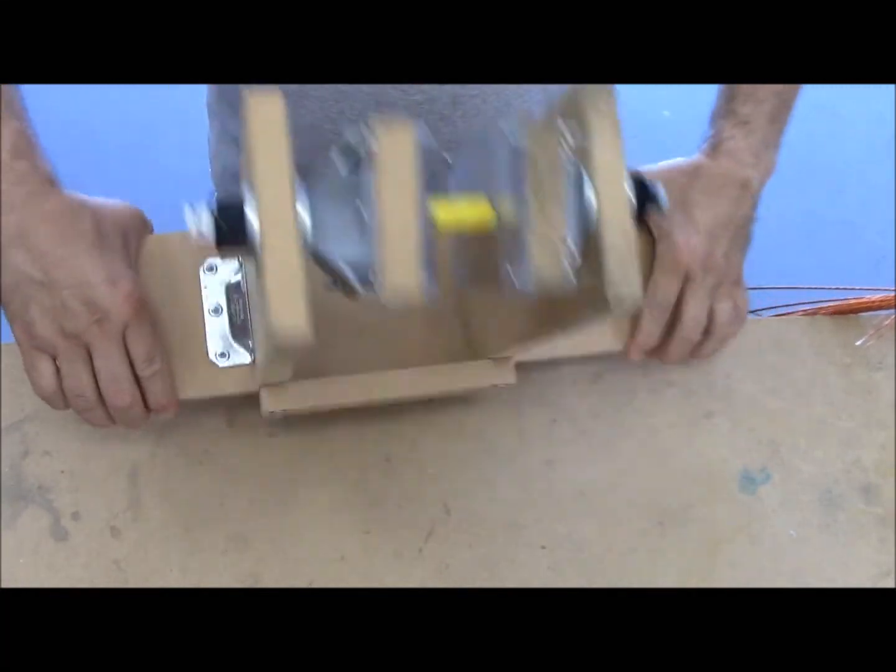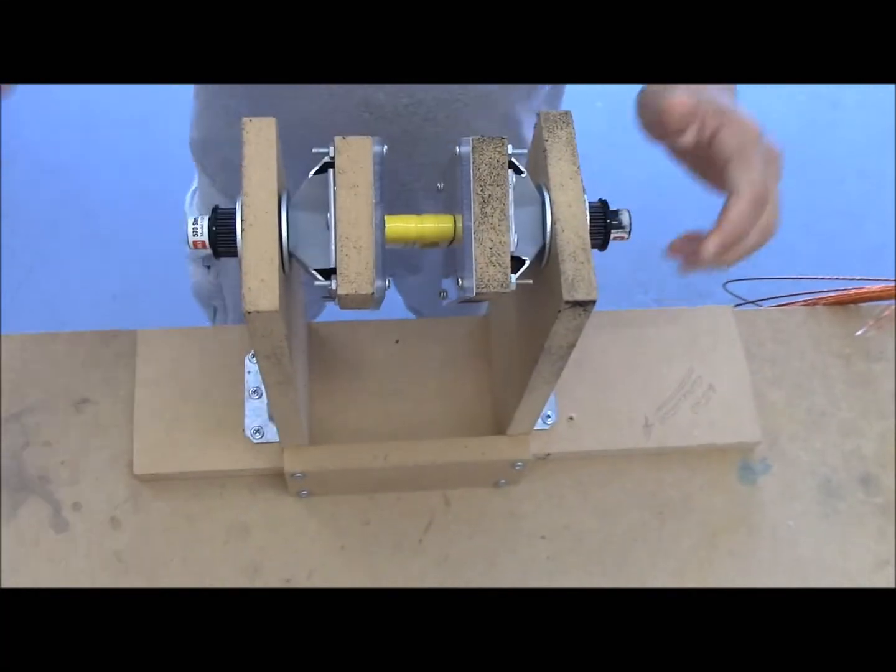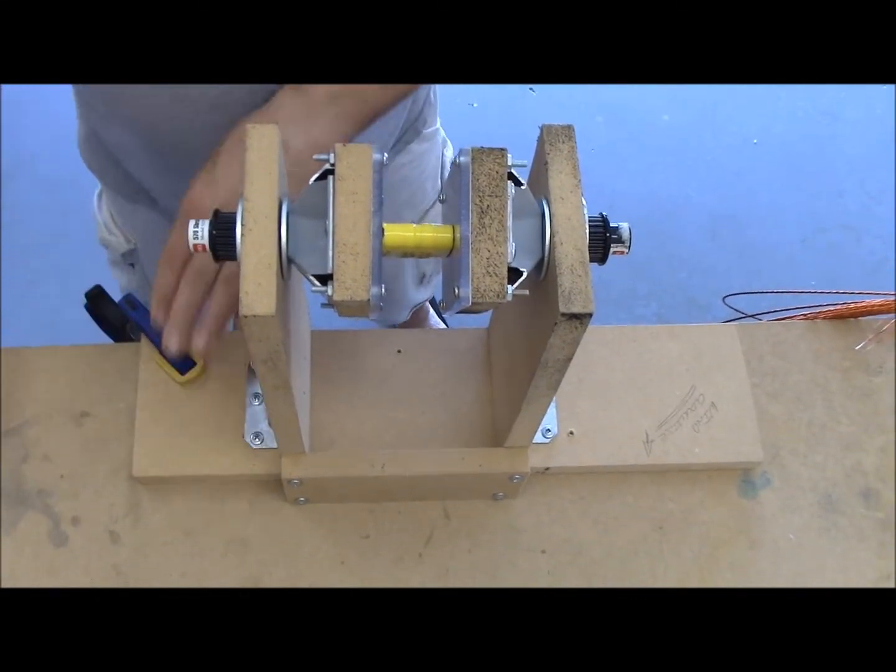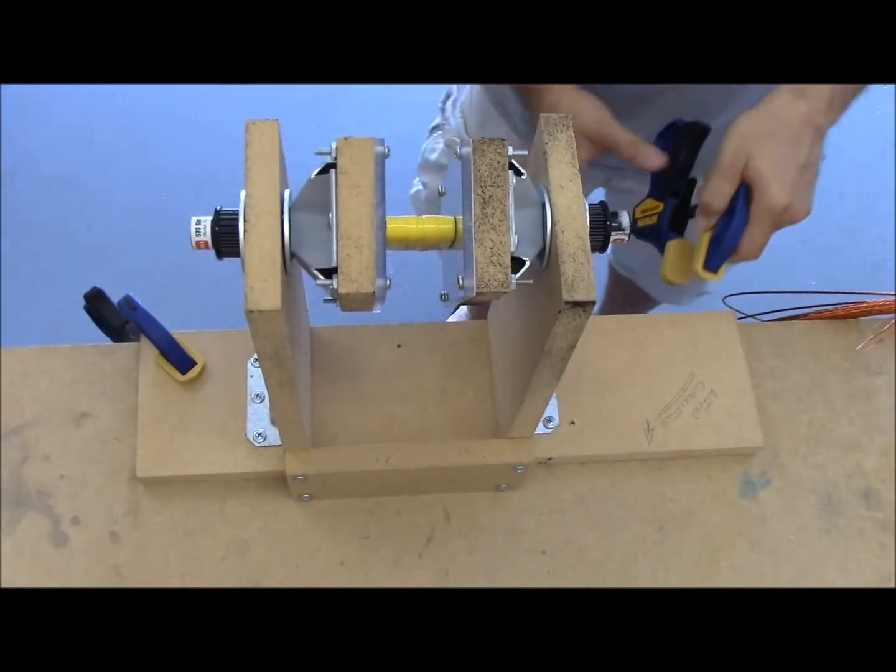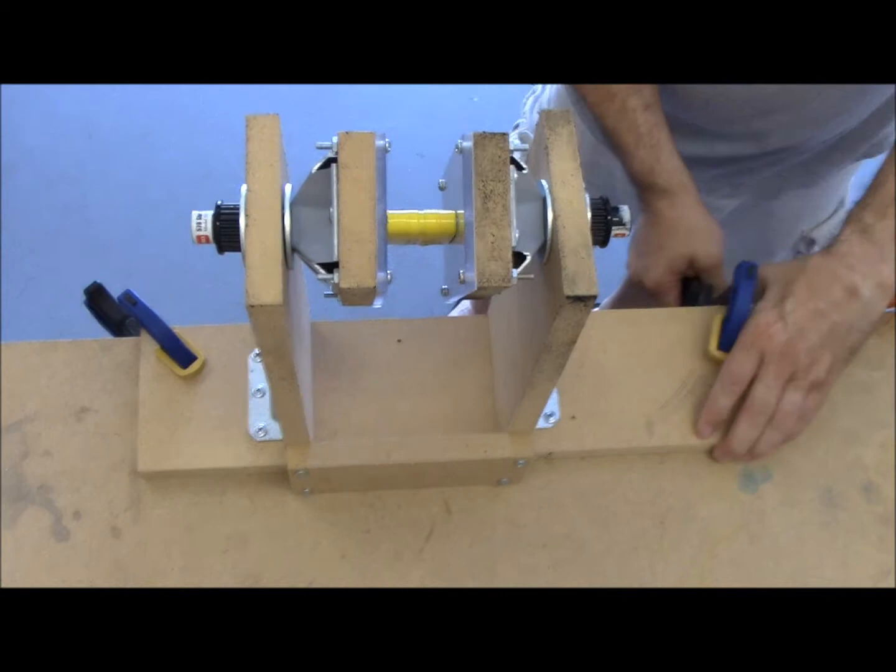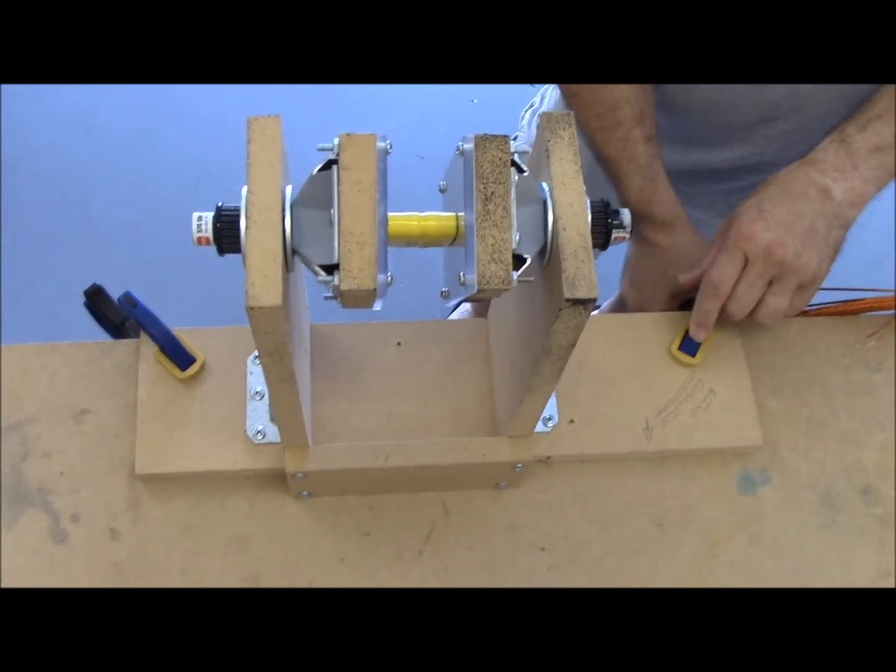To keep the jig from moving on me, very similar to the other one, I'm just going to clamp it down with a couple of these clamps. Keeps it pretty firm. And we're ready to do some windings.